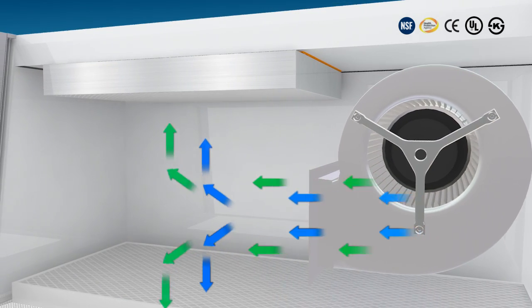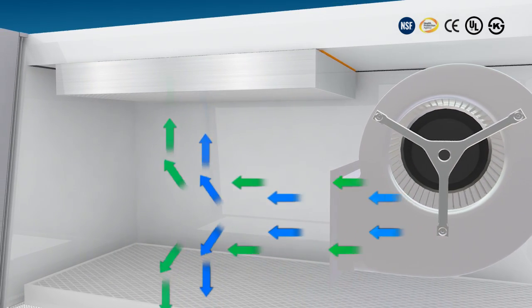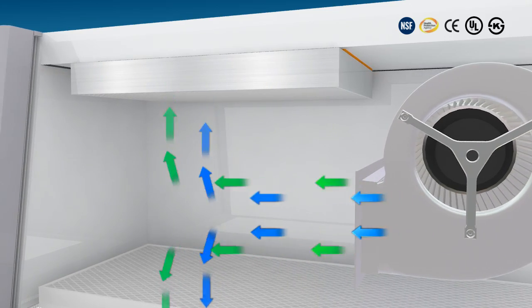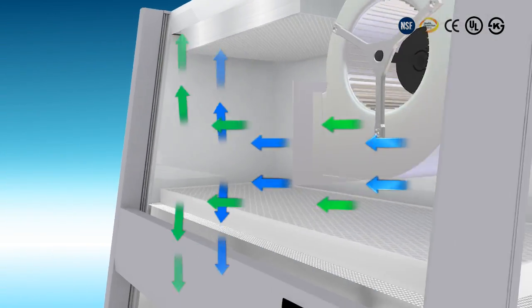The air supplied to inside chamber is evenly distributed around work surface with laminar flow, which prevents cross-contamination between samples.